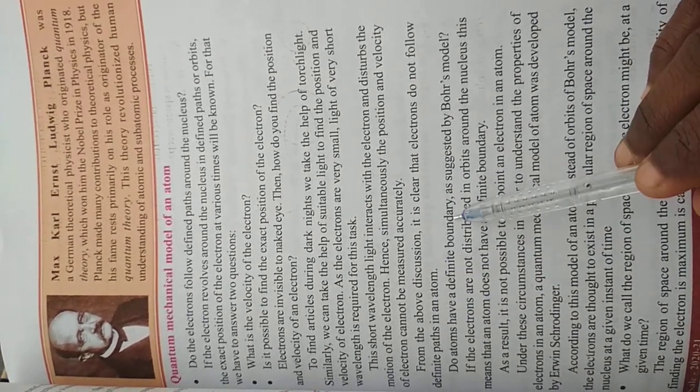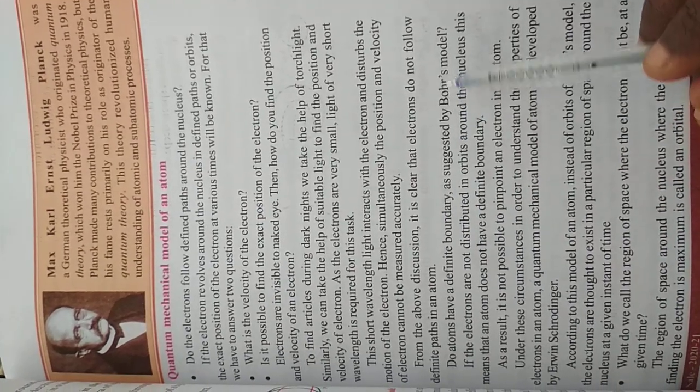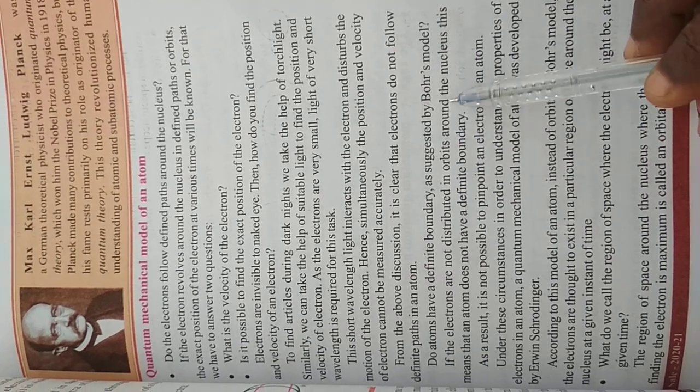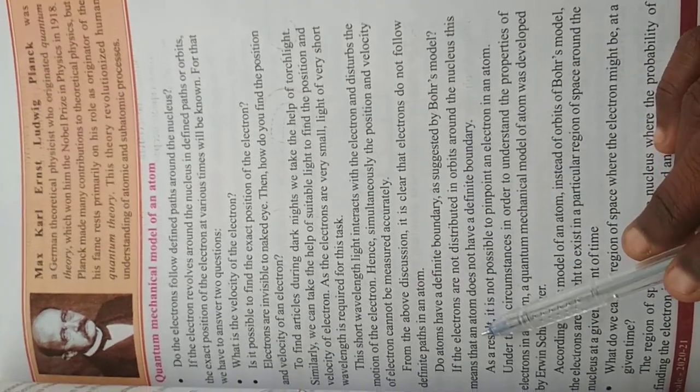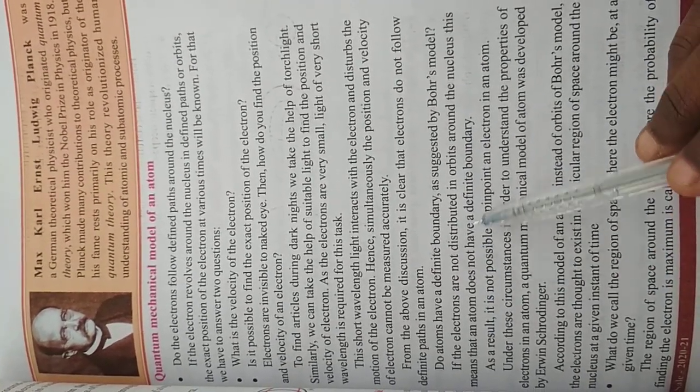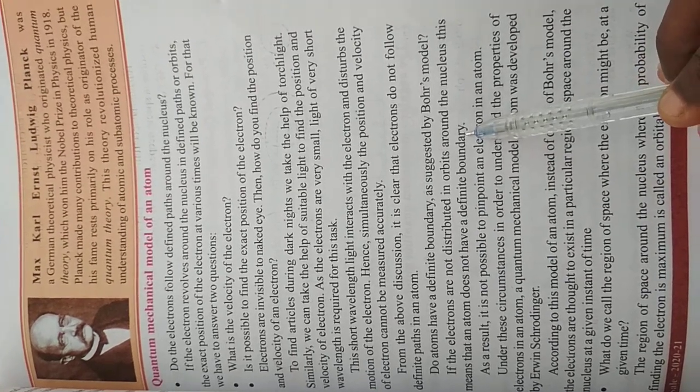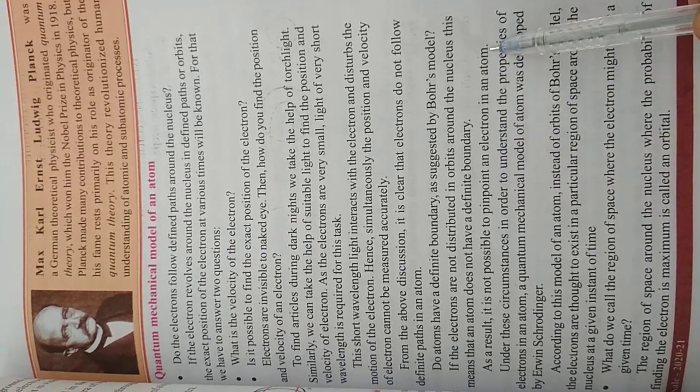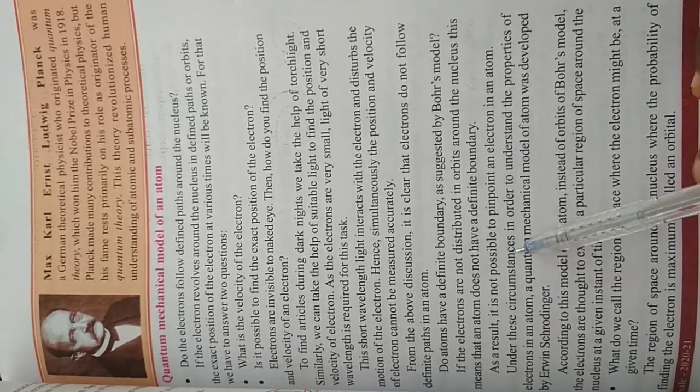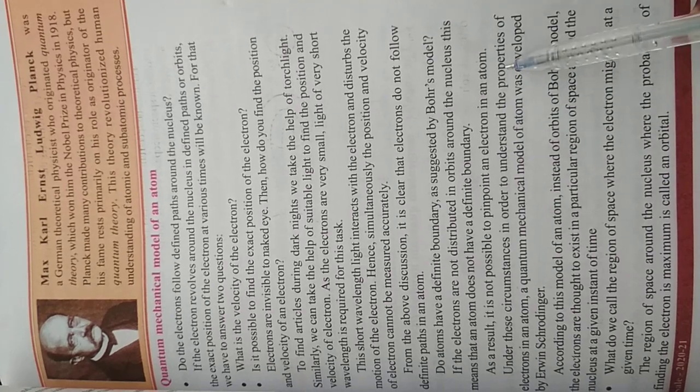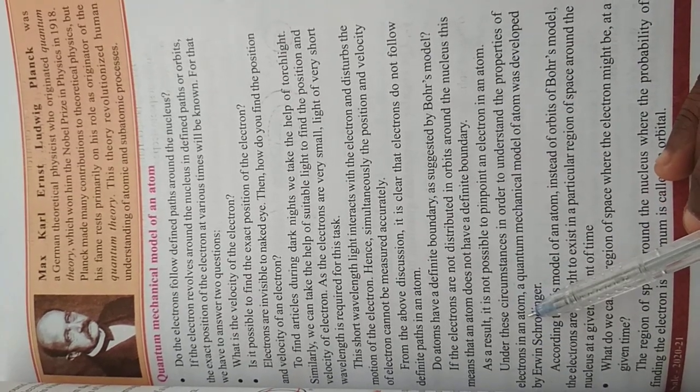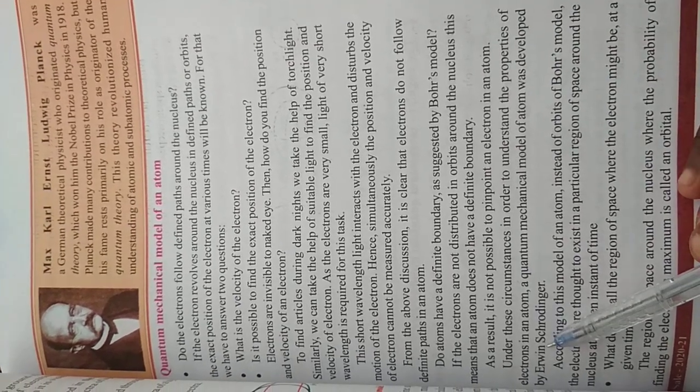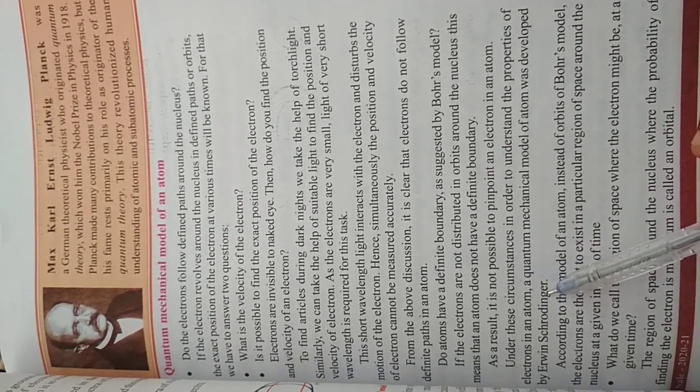Do atoms have a definite boundary? As suggested by Bohr's model, if the electrons are not distributed in orbits around the nucleus, this means that an atom does not have a definite boundary. As a result, it is not possible to pinpoint an electron in an atom. Under these circumstances, in order to understand the properties of electrons in an atom, the quantum mechanical model of the atom was developed by Erwin Schrödinger.